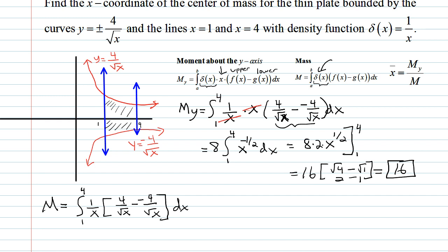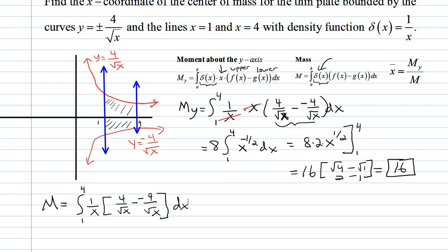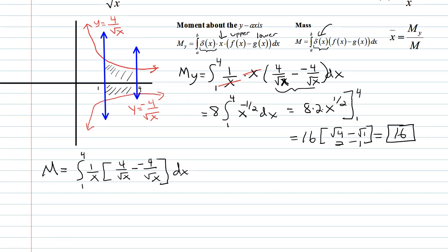So we get 8 over root x again, but then that's multiplied by a 1 over x. And so what's going to end up happening then, we'll pull the 8 out, integrate from 1 to 4, and then x root x is x to the 3 halves power in the denominator.